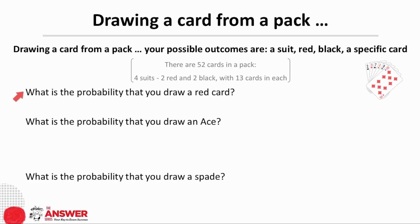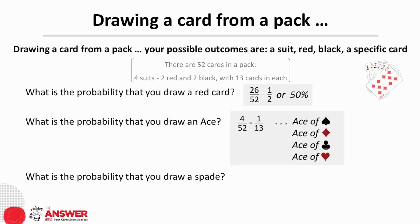Our first question: what is the probability of drawing a red card? There are two red suits and two black suits, which means half the pack is red, which is 26 out of 52 cards. So the probability of drawing a red card is a half or 50%. Next, what is the probability that you draw an ace? Each of the four suits has one ace — the ace of spades, of diamonds, of clubs, and of hearts — so there is a four in 52 chance of drawing an ace. The probability of drawing an ace is therefore 1 over 13.